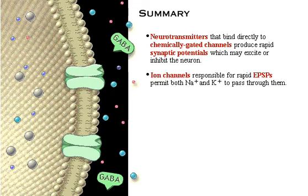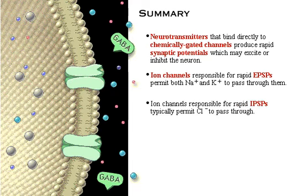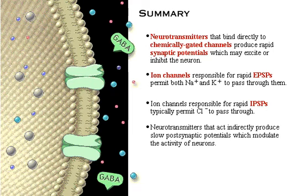Ion channels responsible for rapid excitatory postsynaptic potentials permit both sodium and potassium to pass through them. Ion channels responsible for rapid inhibitory postsynaptic potentials typically permit chloride to pass through. Neurotransmitters that act indirectly produce slow postsynaptic potentials, which modulate the activity of neurons.